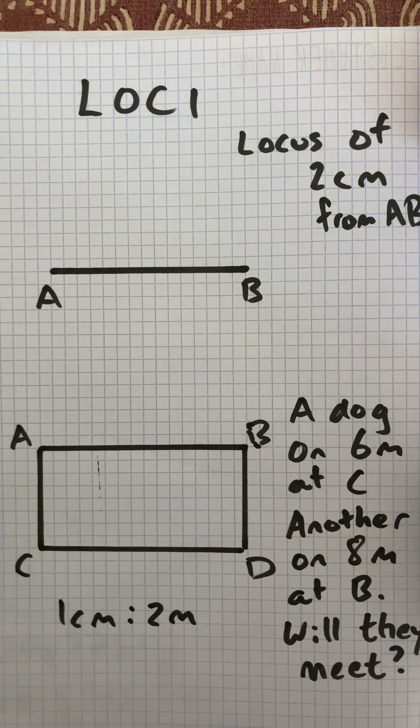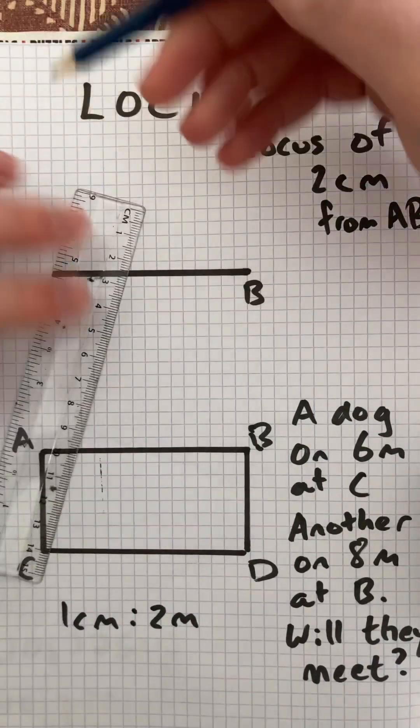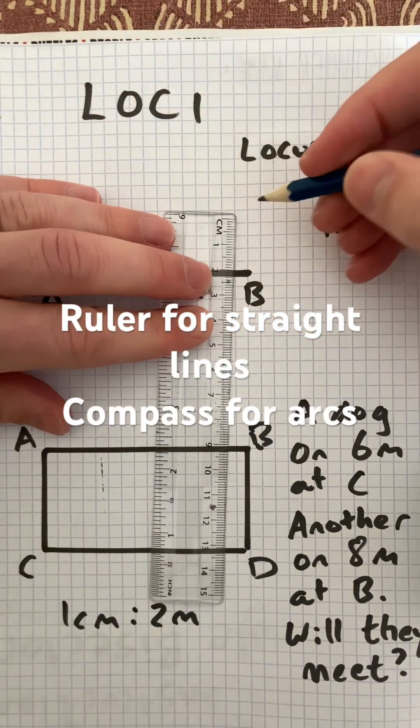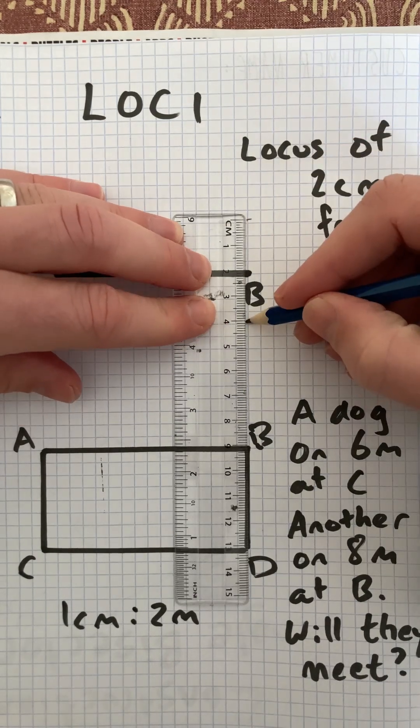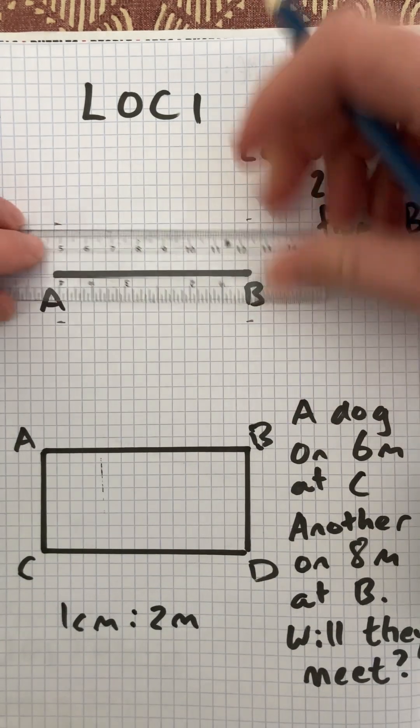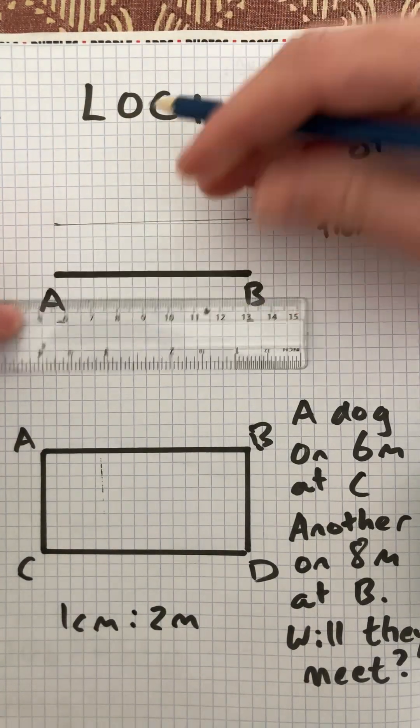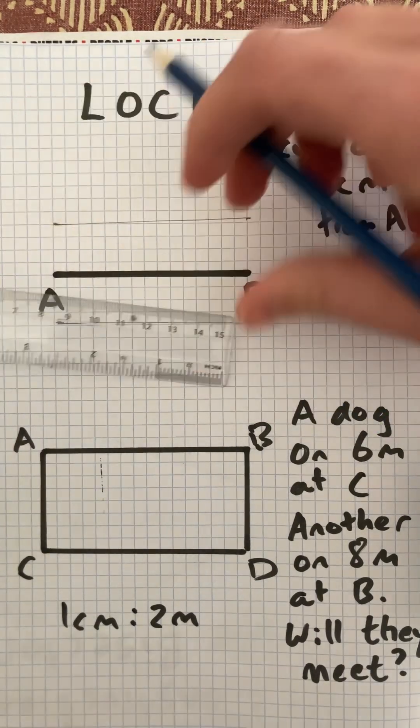I'm going to use a ruler to mark 2cm above and below point A, and continue that above and below point B, then connect those. This will end up looking like an athletics track, because the straight lines will be parallel.